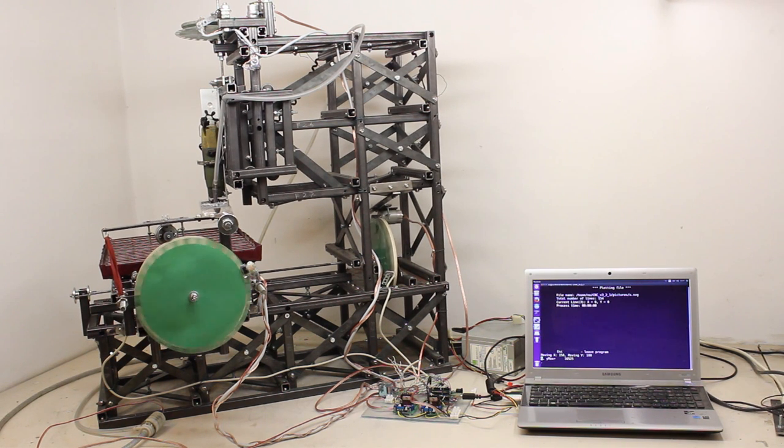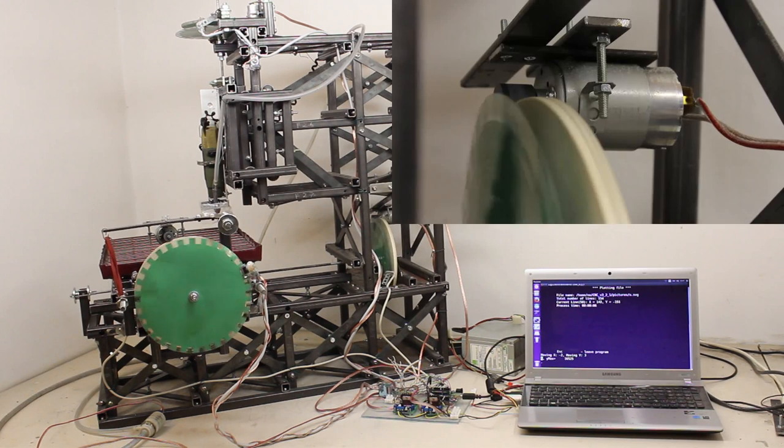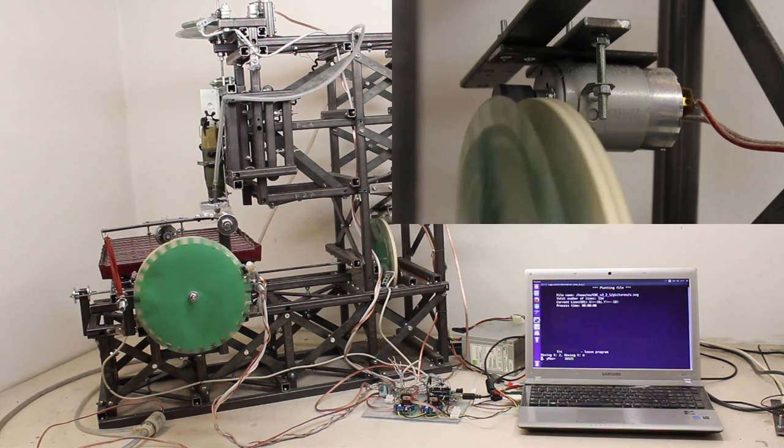This is the DC motor configuration of my CNC version 3.2. The motors I am using here are from old printers.